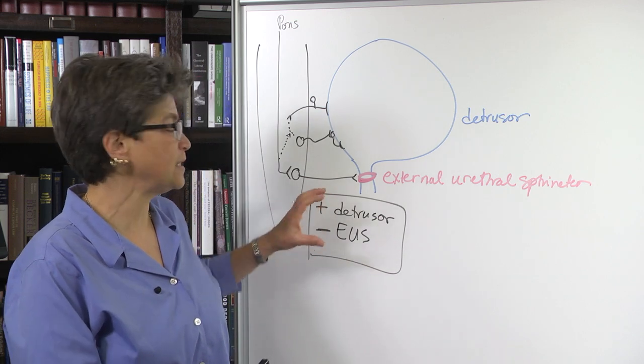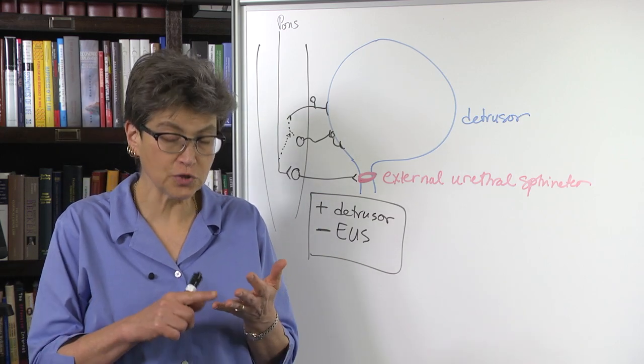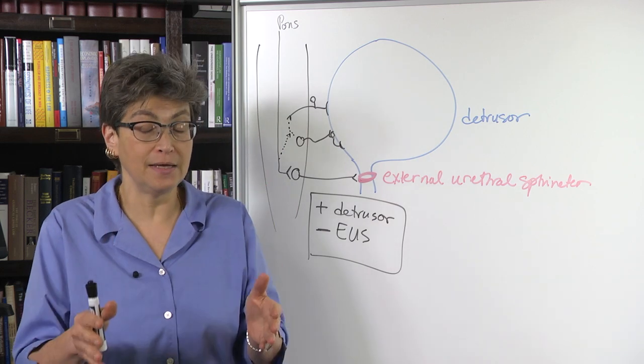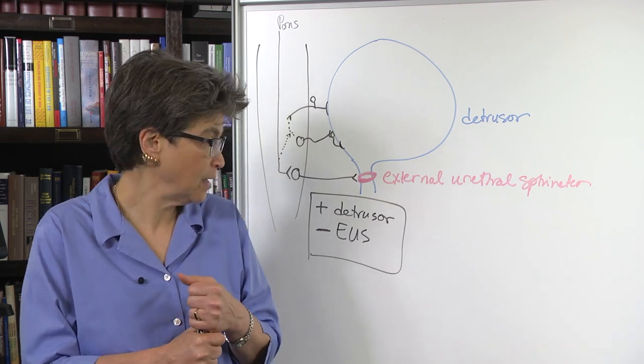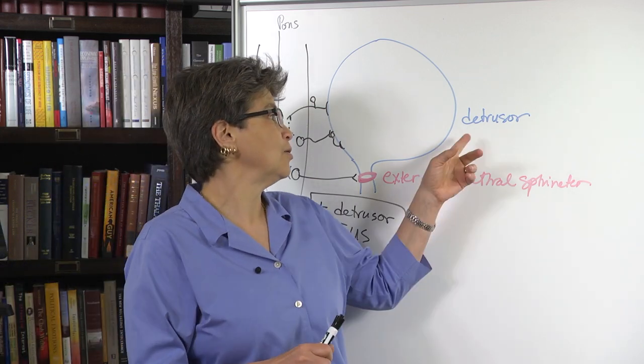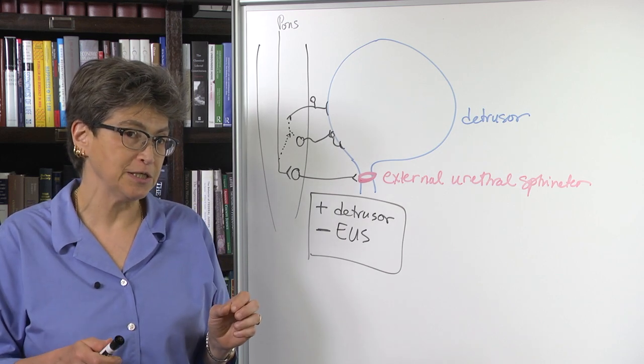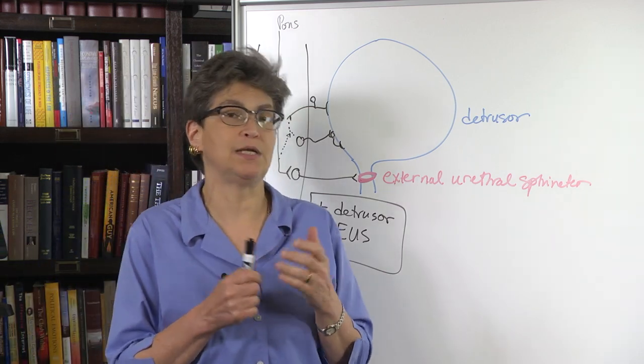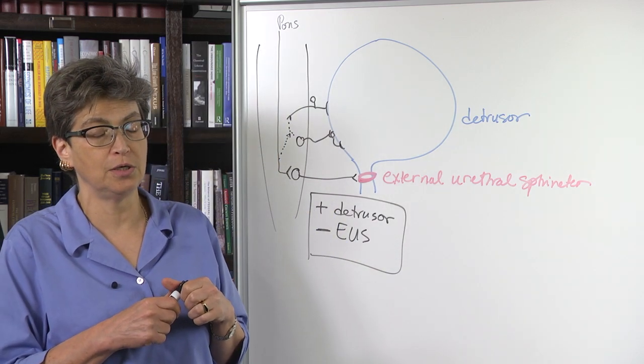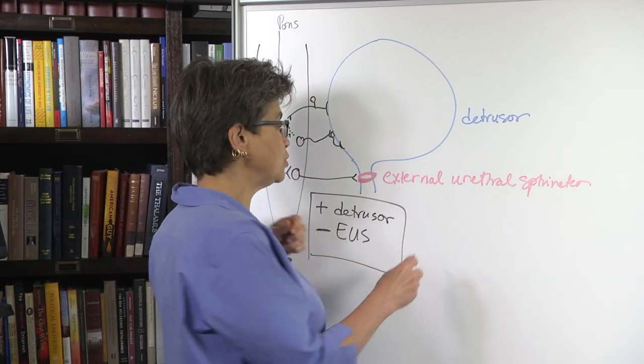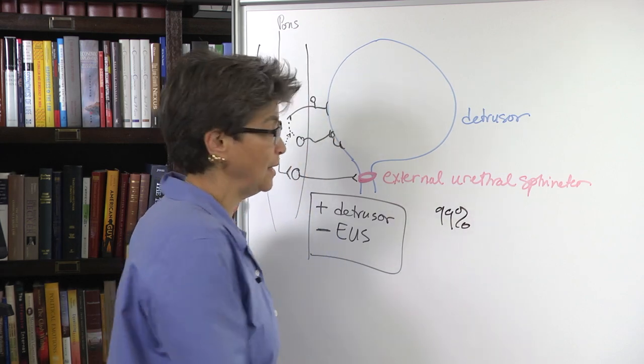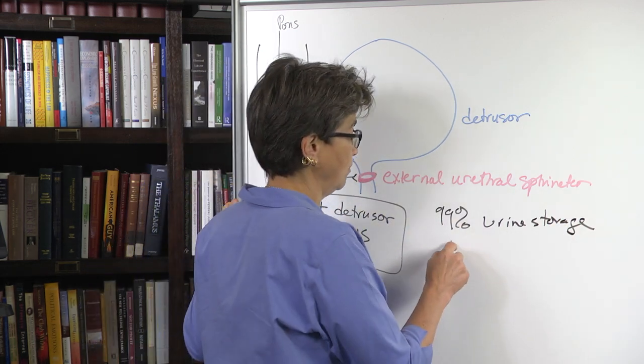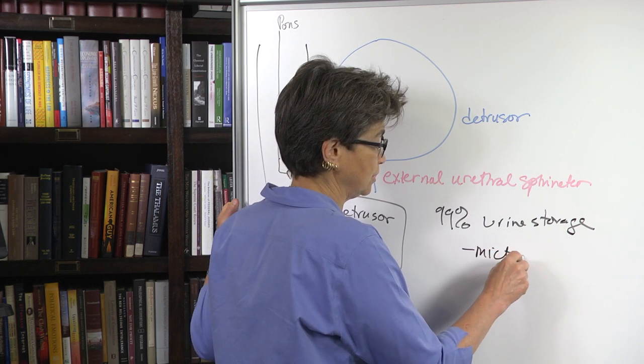So this is a behavior that, first of all, needs both autonomic and skeletal muscle. It needs, not can use, but needs a collaboration between smooth muscle and skeletal muscle. The next thing to consider is that this is an action that takes place extremely rarely. So out of 24 hours in a day, there is less than two minutes of that 24 hours is spent voiding urine. Okay? So you spend 99% of your time in urine storage, and then there has to be a closely regulated time when micturition occurs.